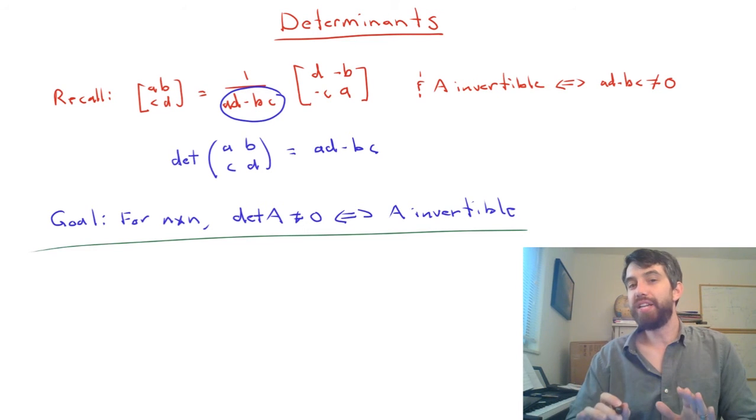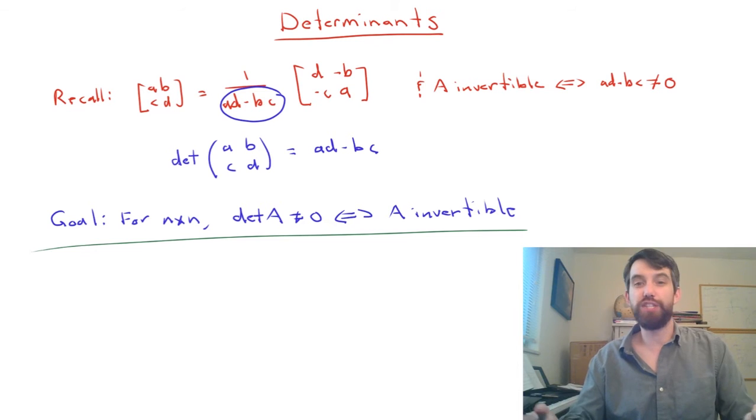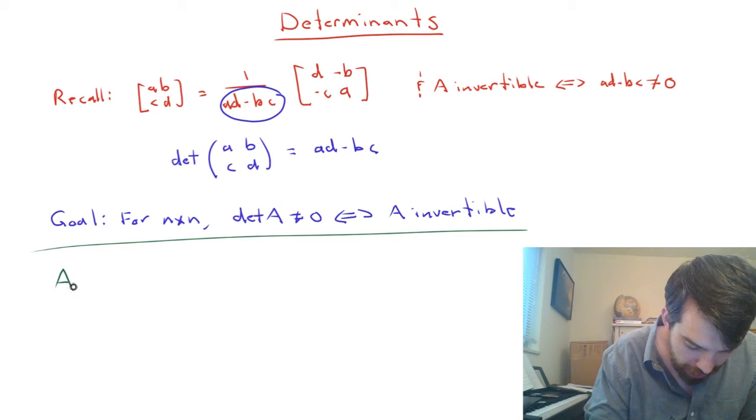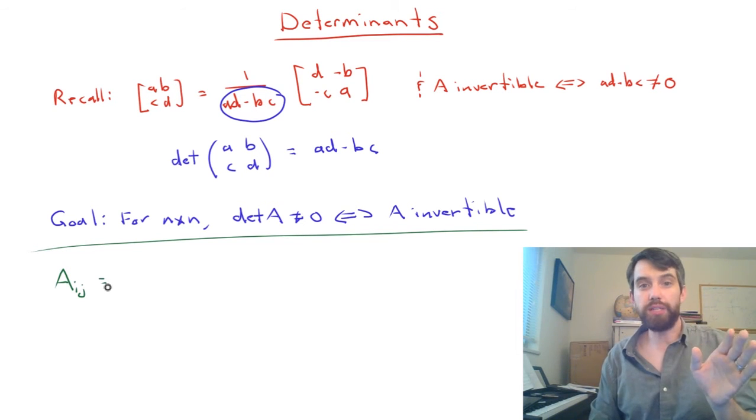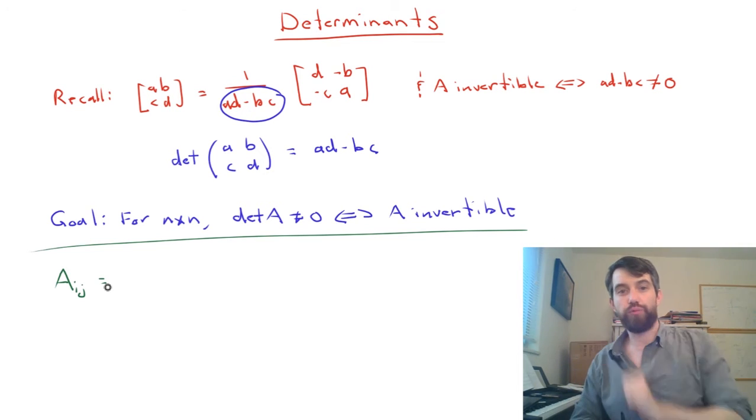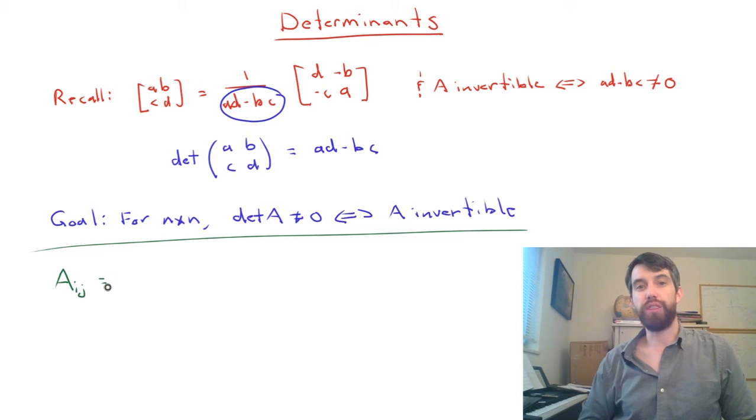Now before I get to the formula, I'm going to introduce a little bit of notation that we're going to need along the way. The first of which is something called A_ij. This is a matrix, as denoted by the capital letter A, and it is effectively the matrix A, whatever you started with, where you delete the ith row and you delete the jth column.